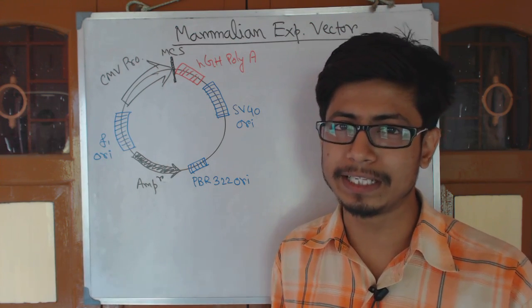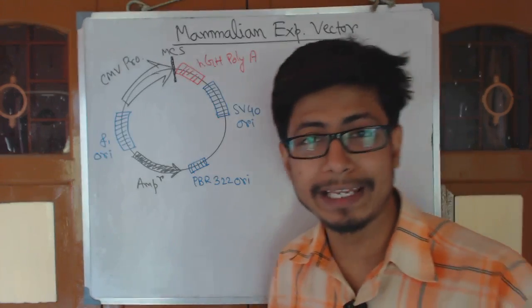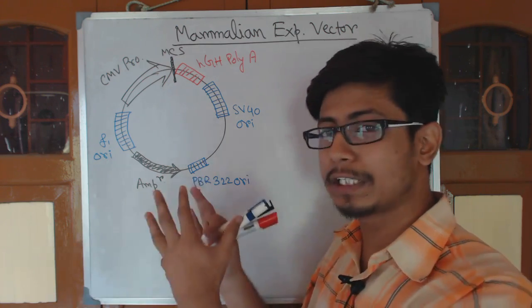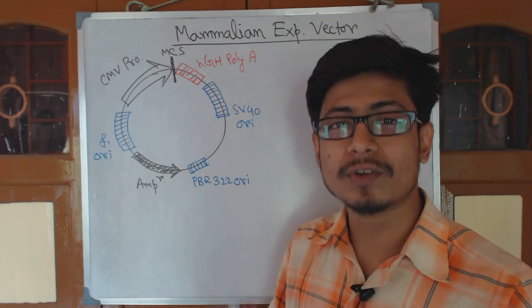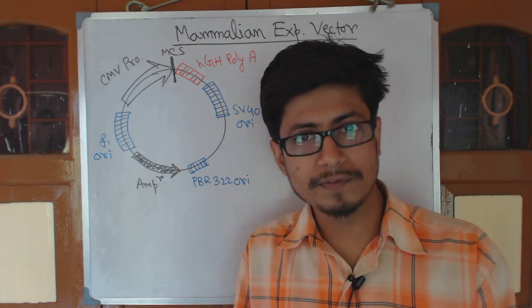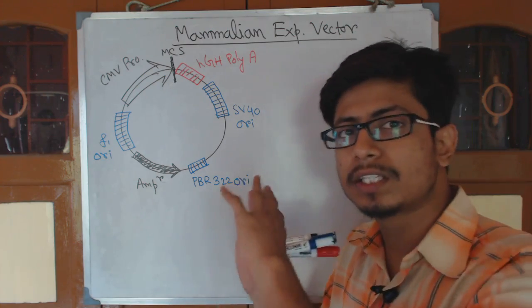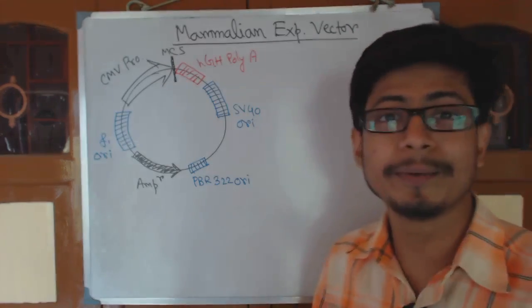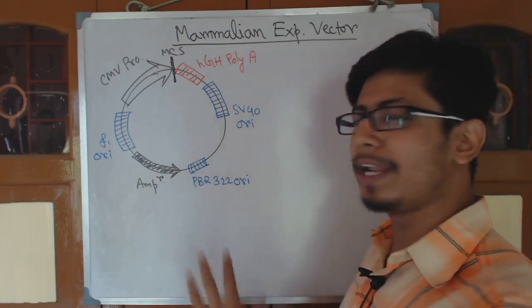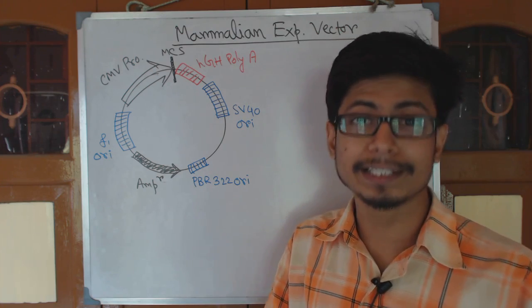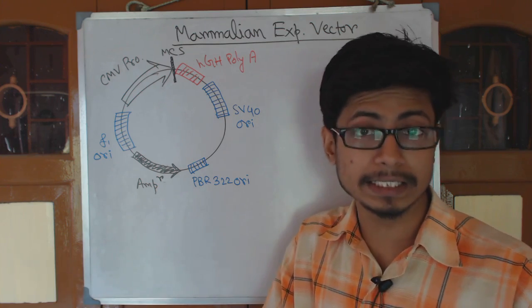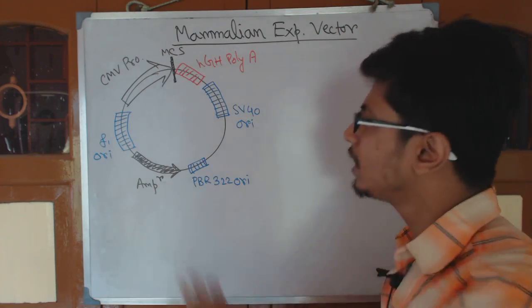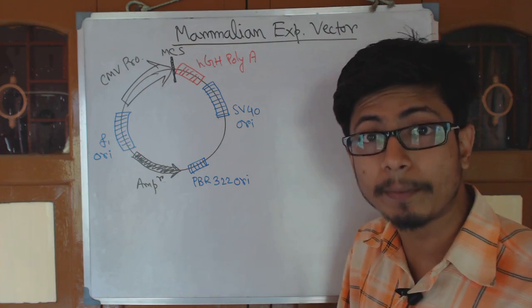Mammalian cells will generally not take up DNA fragments from outside the way bacteria do in transformation. In this case we need to artificially transfer the vector inside the mammalian cell — a process known as transfection. Transformation is for bacteria; transfection is for eukaryotes. Eukaryotic cells treat foreign DNA as an invader, degrading it or dying. So we must construct the vector carefully, with our target gene, so it can be expressed inside the mammalian cell.